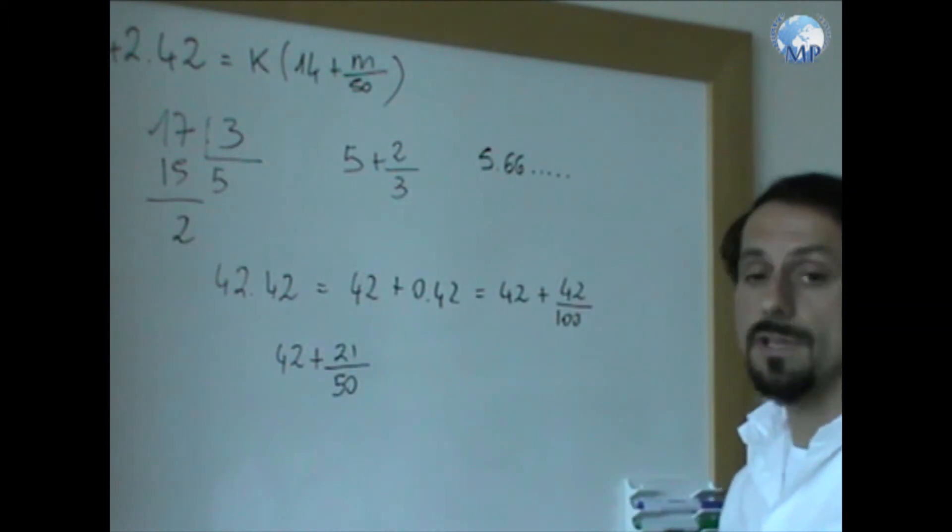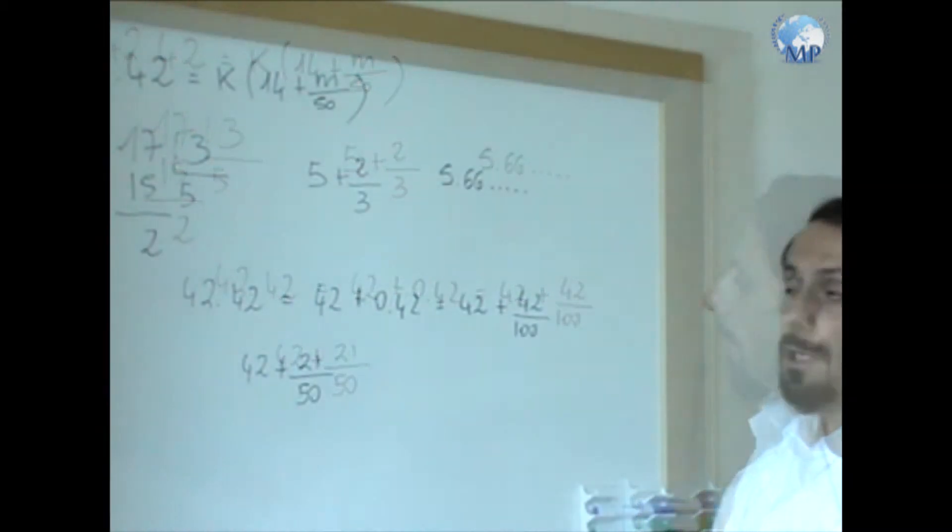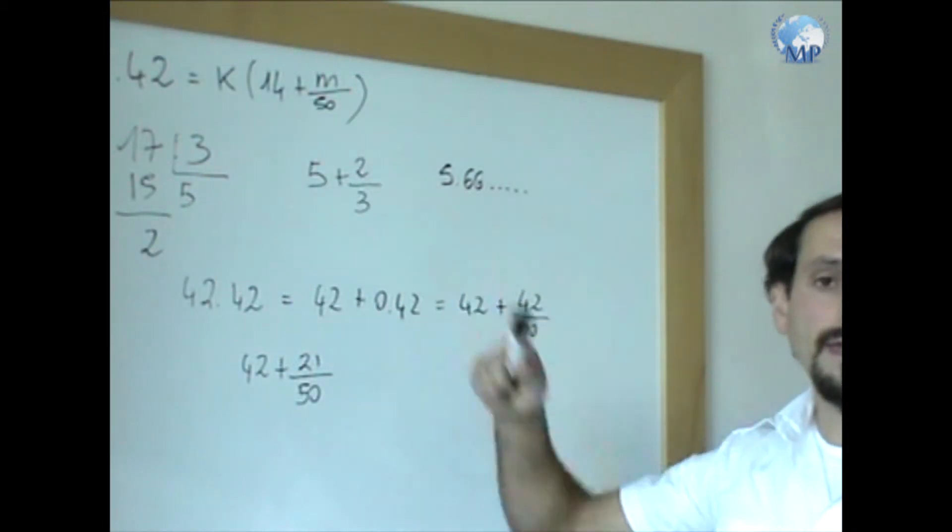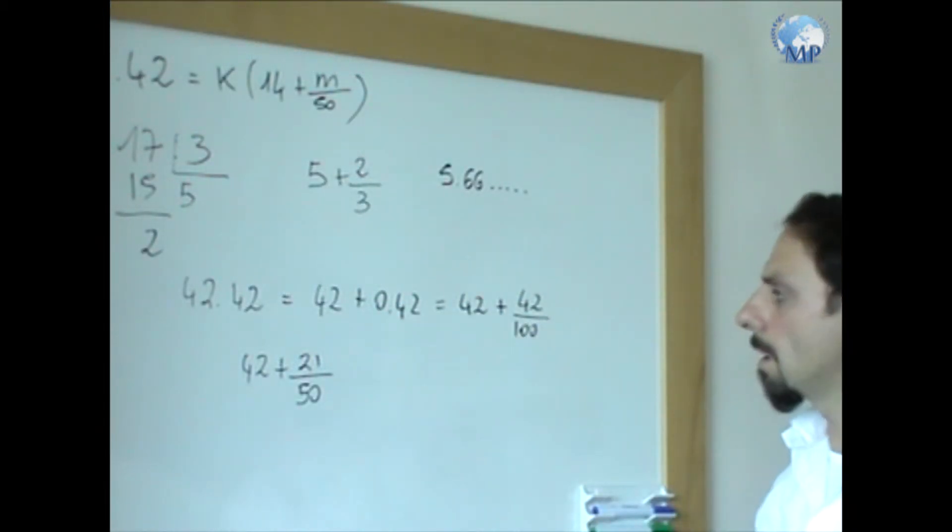This now is very similar to the one given. Only k here has been taken out of brackets. What can I take out of brackets here?